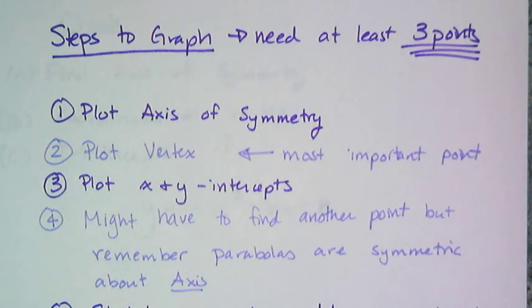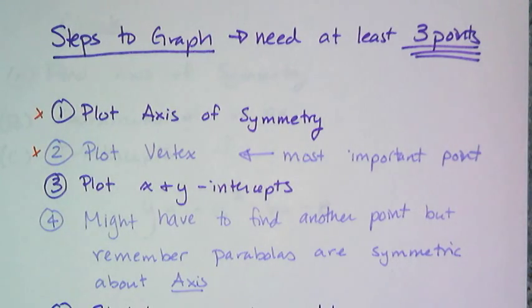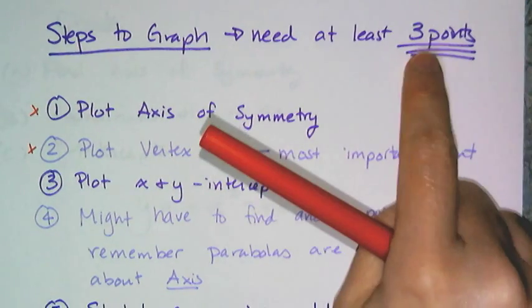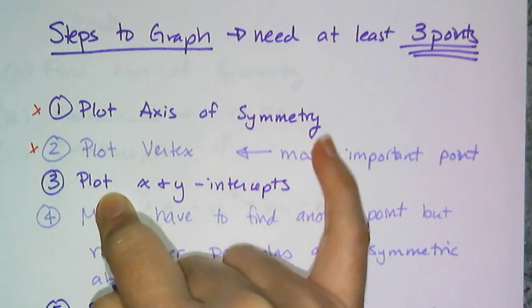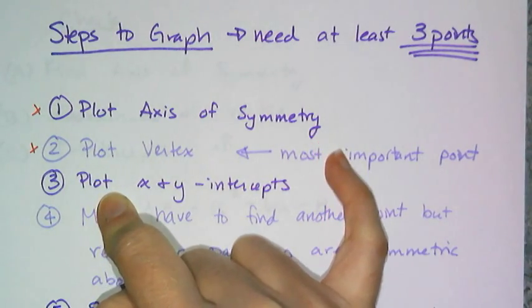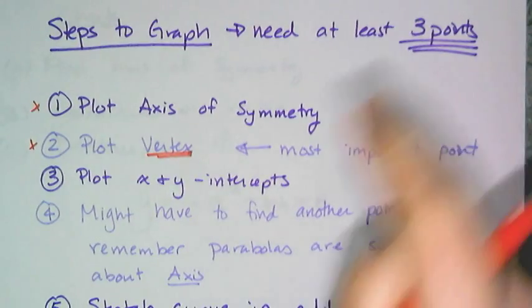And these two steps here are the most important. Finding and plotting the axis of symmetry and plotting the vertex. One of the three points that you need for graphing by hand is the vertex. This is actually the single most important point on the parabola because it's going to tell you either the lowest value or the highest value. It will tell you what your range is. And in application that highest point is actually usually pretty important. So you need to find the vertex. That's one of your three points.